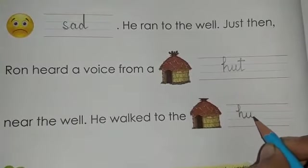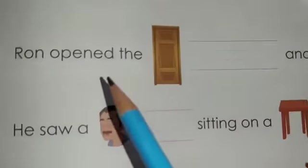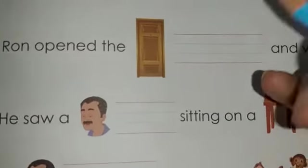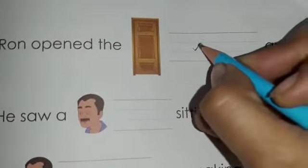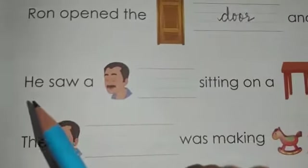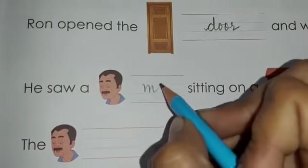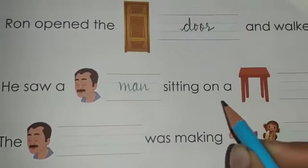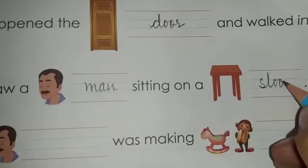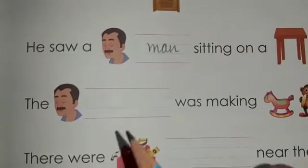He walked to the hut, H-U-T. Now come on to the next page, page number 13. Then what happened? Ron opened the — what is this? Door. So we write down door, D-double-O-R. And walked in. Full stop. He saw a man — write down man — sitting on a — what is this? Stool, S-T-double-O-L.